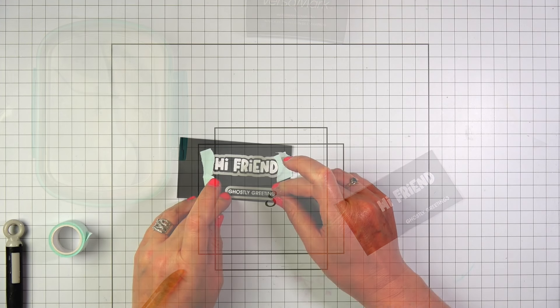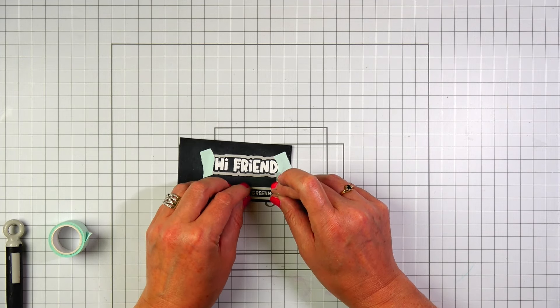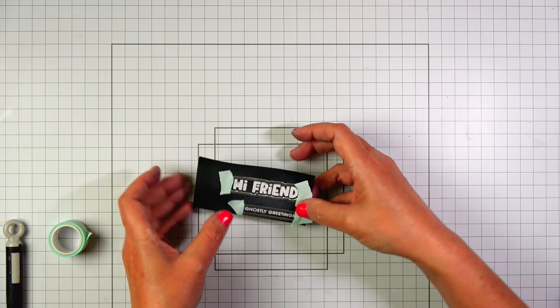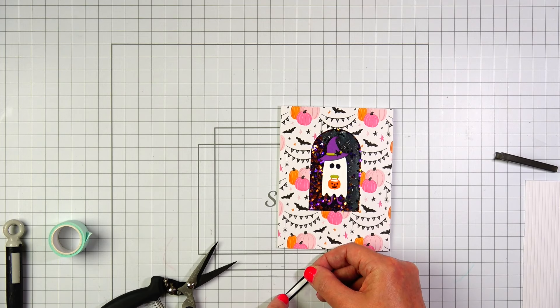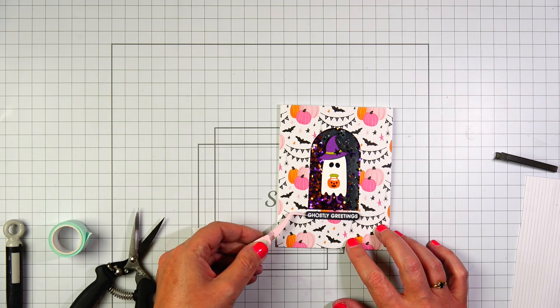I pulled out the coordinating dies for the sentiments from the trick or treat die sets. And I'm going to tape them in place with a little bit of mint tape, run them through my die cut machine. And then I'm going to add the ghostly greetings sentiment to the card panel with one millimeter foam adhesive.